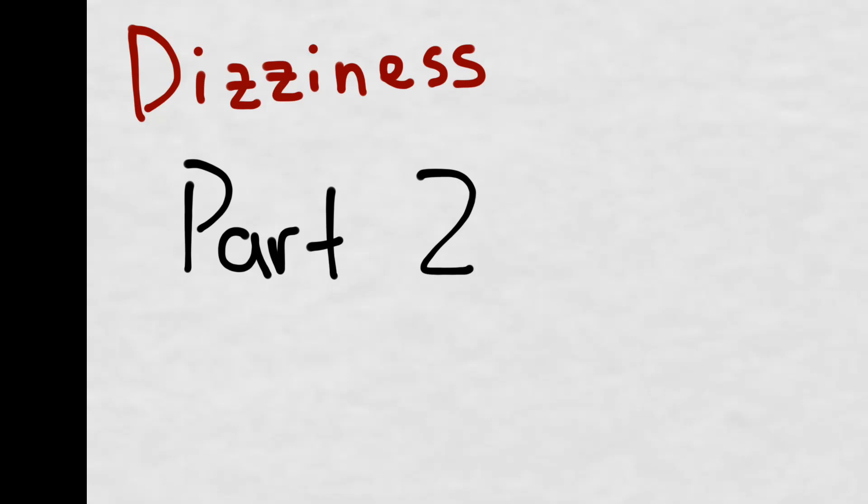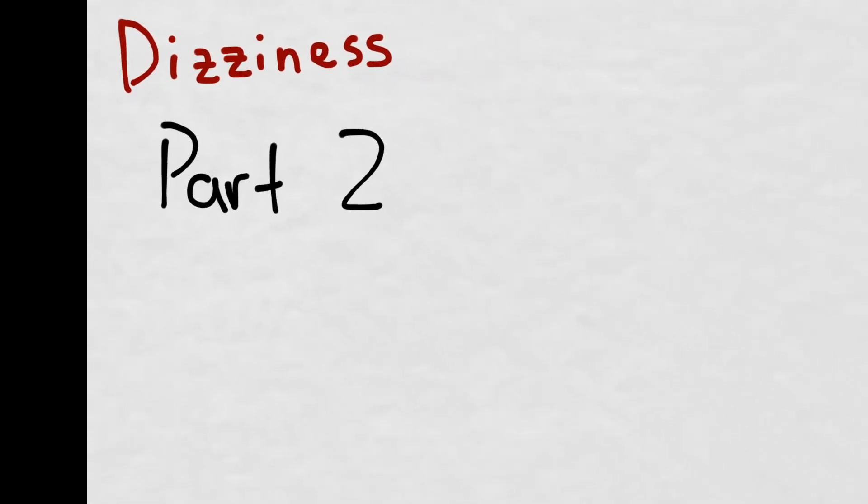This is part two of our dizziness lecture. Please refer to part one if you haven't already. As we keep on hammering in the critical differential mantra, for dizziness there are certain things you can't miss. On the previous lecture, part one, we talked about syncope and presyncope. This lecture will focus on vertigo and disequilibrium.